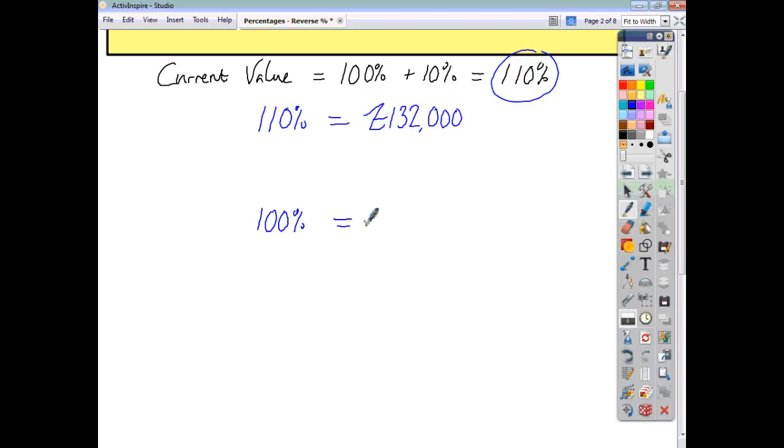Now we can't just jump from 110% to 100%. We've got to go and first of all find 1%. Now, how do we go from 110 to 1? Well, you know that anything divided by itself gives you 1. So if we're dividing that side by 110, we'll divide this side by 110. Because what you do to one side, you do to the other. And that gives us that 1% is £1,200.